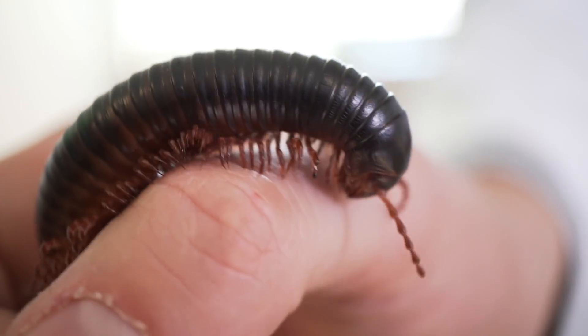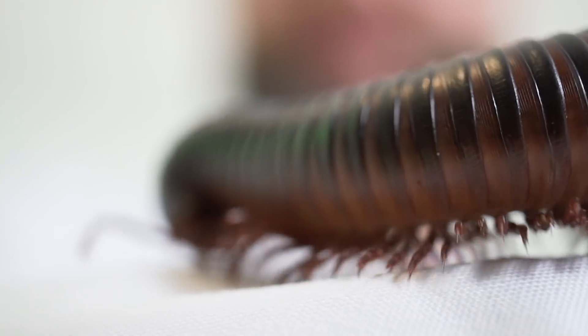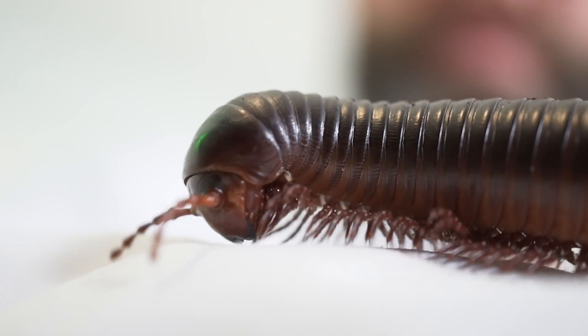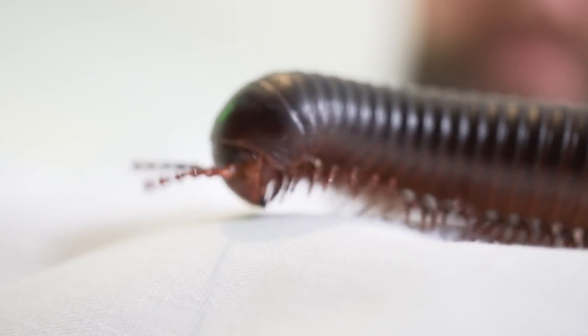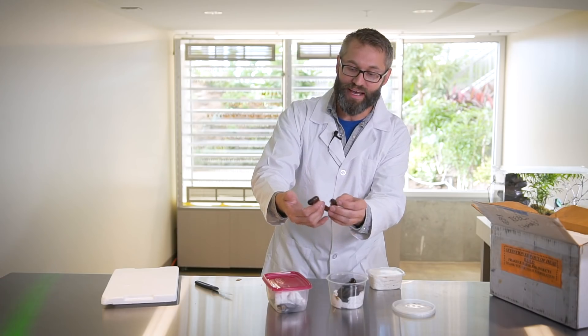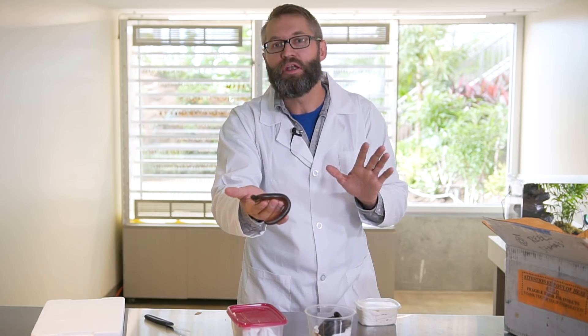They live in the jungles and rainforests of Africa, and they are the biggest millipedes out of the 10,000 species of millipedes in the world. Check that out. Now their name means they have a thousand legs. They don't actually have a thousand legs, but they still have like three or four hundred, so not bad.